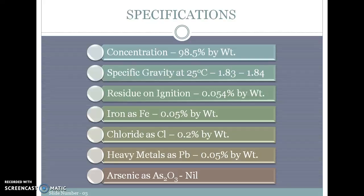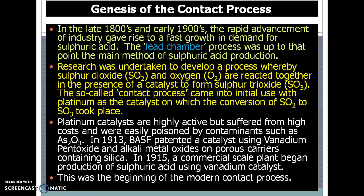These are the required specifications of the product. We discussed how development took place. Initially it was only the lead chamber process which was not very effective. Then research developed a second process which can produce SO3 using a platinum catalyst. Now it is improved to vanadium pentoxide to make sulfuric acid.